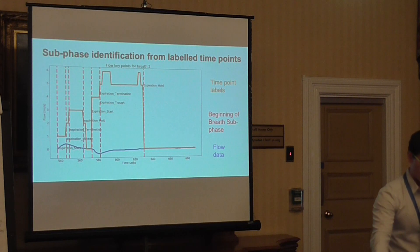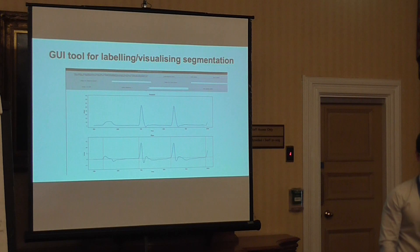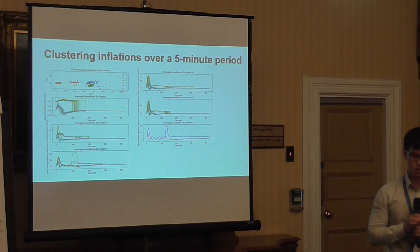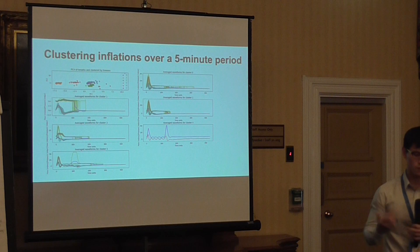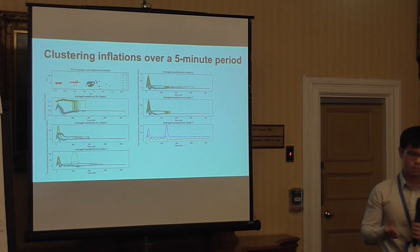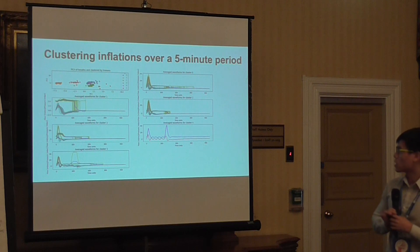This is an example of an individual breath labelled using the windowed average and standard deviation approach — it gets most of the key points correctly. I also wrote a basic graphical tool to label and visualize the outputs. The application uses the length of sub-phases as features to cluster breaths over a period of time — here about 200 breaths across five minutes. Even just using the length of time spent in each sub-phase, you can start to see different kinds of breaths.